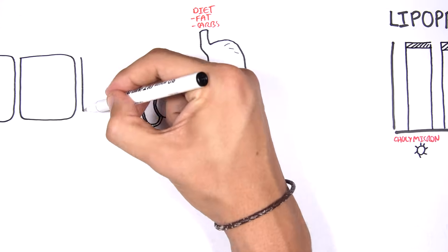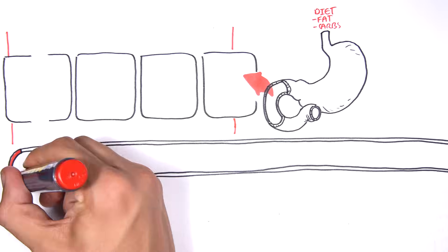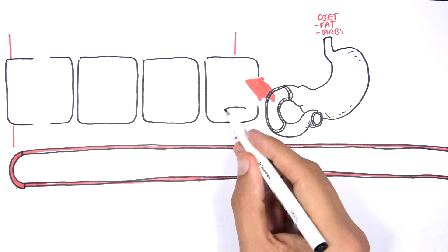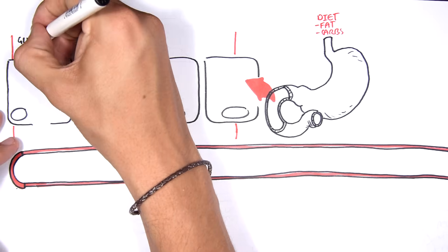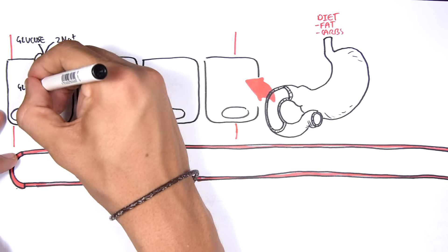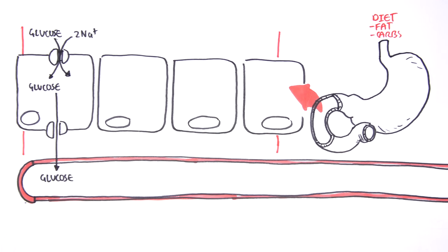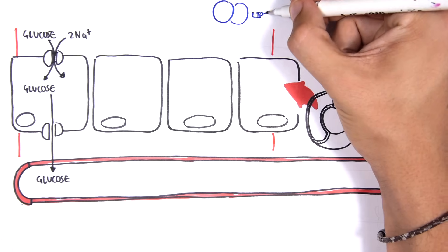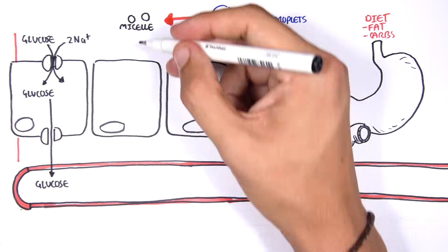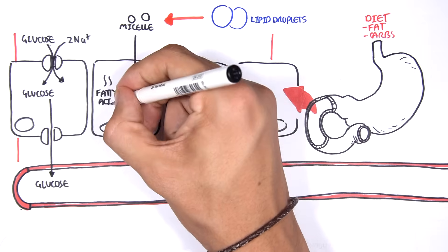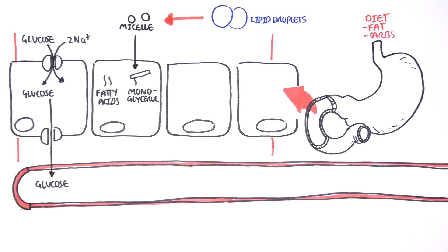These get digested and then absorbed in the duodenum of the small intestine. Here I am drawing some intestinal cells with blood vessels underneath. On the apical side, we have a sodium glucose transporter which takes in one glucose for two sodium molecules. Glucose is then reabsorbed into the blood. The fats arrive as lipid droplets, are digested and emulsified into micelles, which are then absorbed as monoglycerides and fatty acids. Cholesterol is also absorbed.